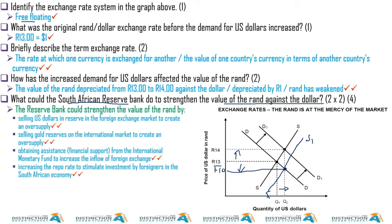Increasing the repo rate to stimulate investment by foreigners in the South African economy is another option. The government can also use the dollars they have in reserve to buy the rand. Instead of talking about an oversupply of the dollar, this creates an increase in demand for the rand. By selling dollars on the open market and buying the South African rand, they create demand for the rand, and the rand will appreciate.